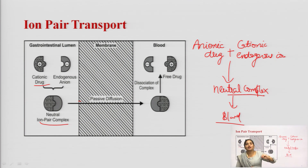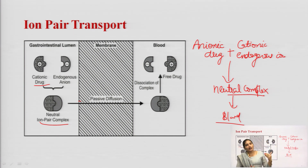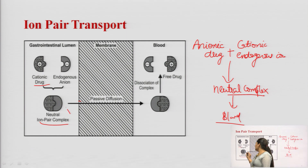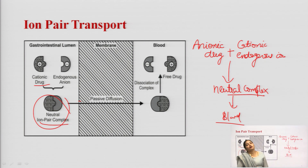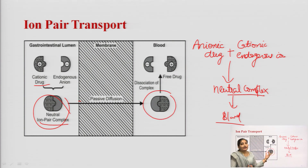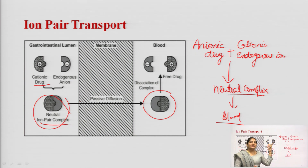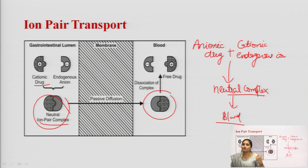In summary, in ion pair transport a drug — whether cationic or anionic — binds with the opposing endogenous ion to form a neutral ion pair complex. This complex is easily transported by passive diffusion across the membrane. Upon reaching the blood, the complex dissociates and the drug is released in free form.